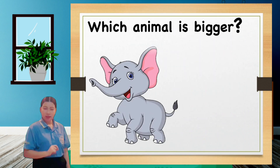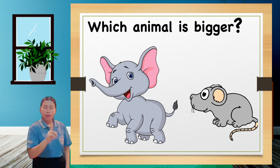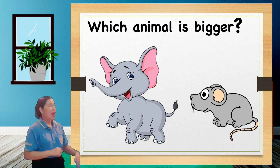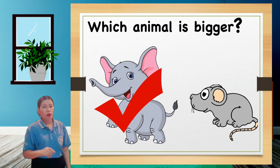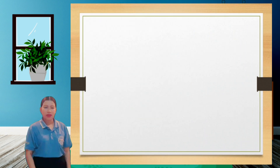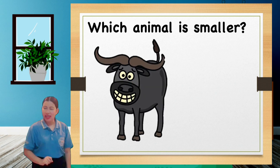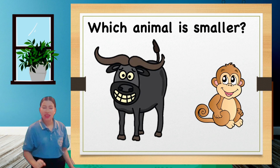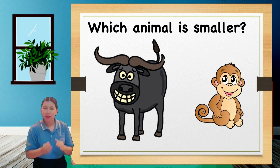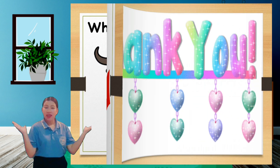Next we have big and small. First example: which animal is bigger — an elephant or a rat? Can you guess? The answer is an elephant. Next, we have a buffalo and a monkey. Which animal is smaller — a buffalo or a monkey? Very good, the answer is monkey.